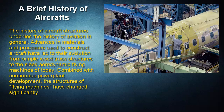A brief history of aircraft. The history of aircraft structures underlies the history of aviation in general. Advances in materials and processes used to construct aircraft have led to their evolution from simple wood truss structures to the sleek aerodynamic flying machines of today. Combined with continuous power plant development, the structures of flying machines have changed significantly.